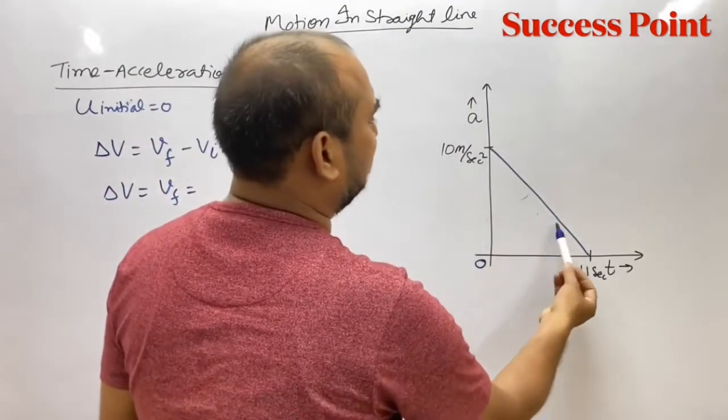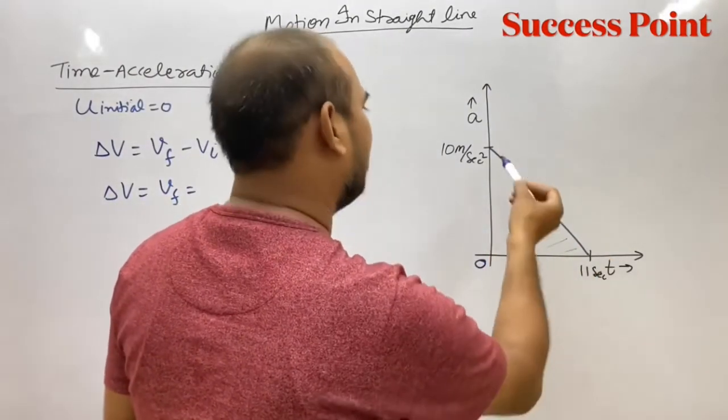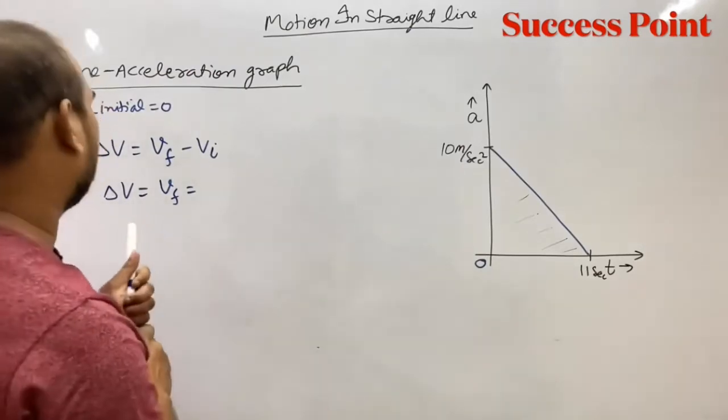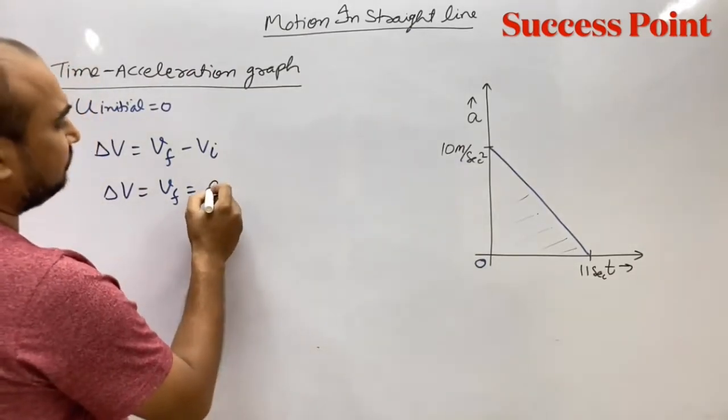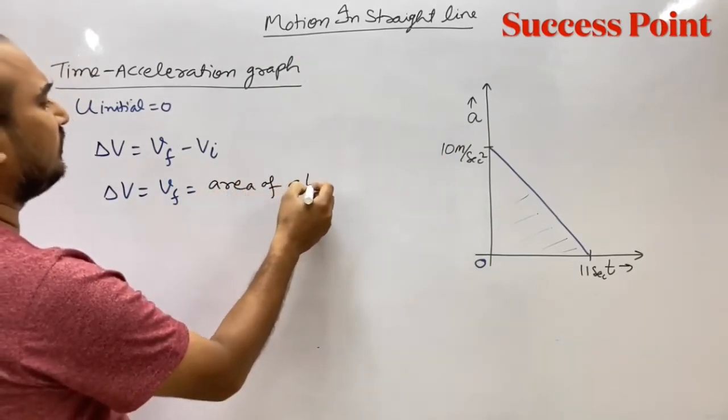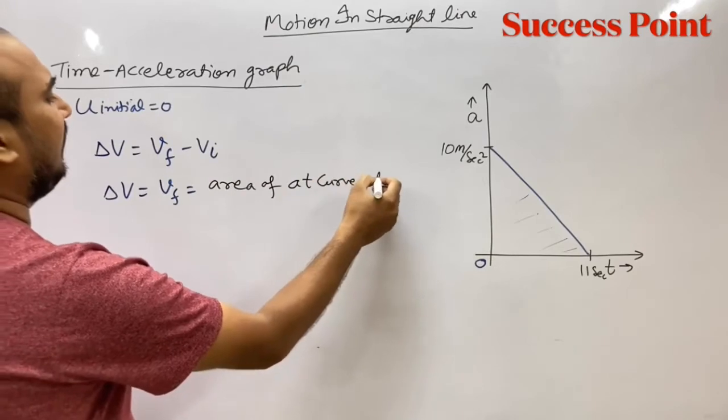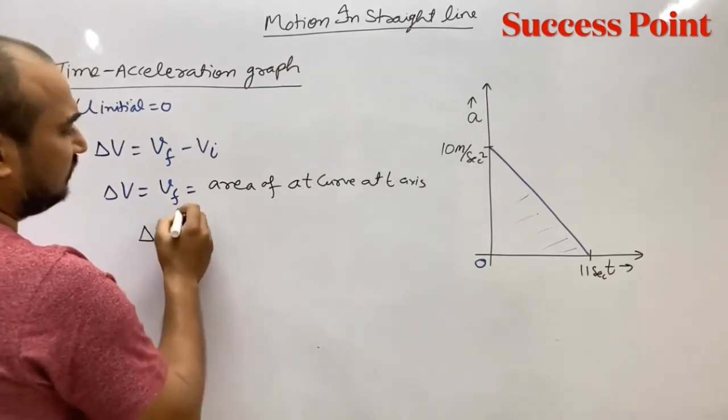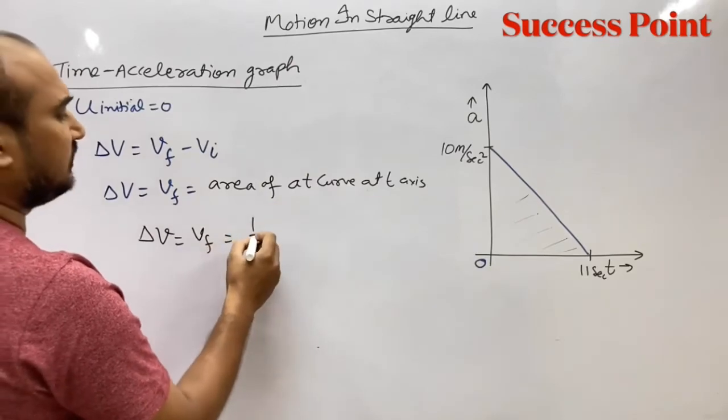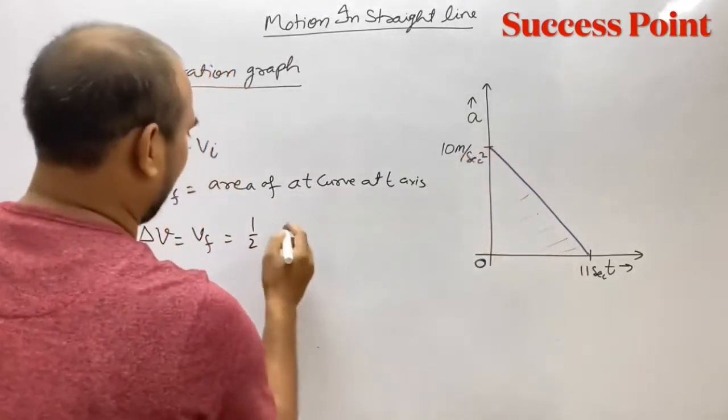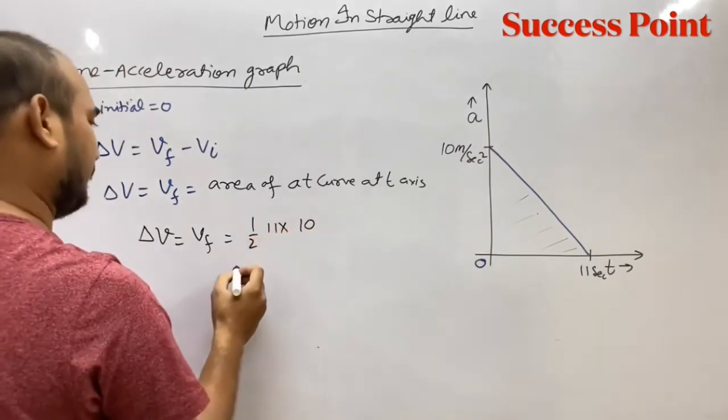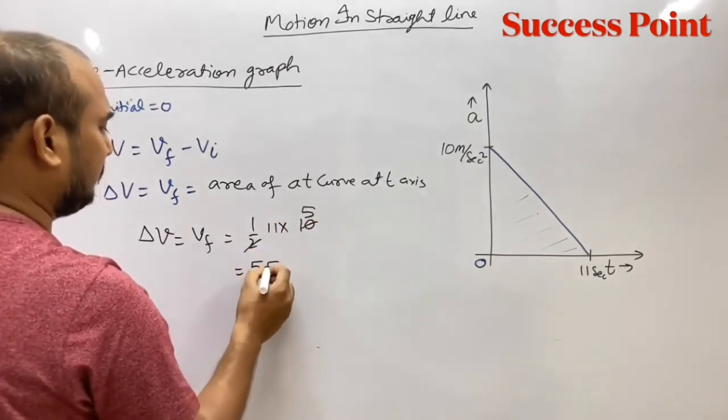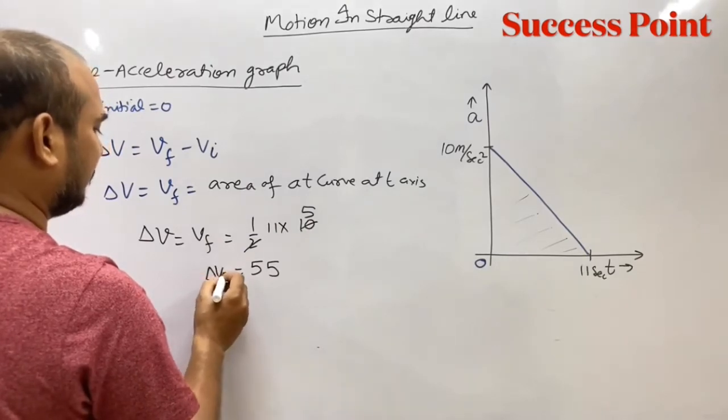Now how can you find the change in velocity here? I know from the A-T graph that the area between the graph and the time axis gives us the change in velocity, which is the final velocity and maximum velocity. Half base into height. Base is 11, height is 10. So half cancels, leaving 5 times 11, which gives us 55 m/s.